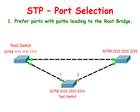Now let's look at some examples of how a switch would use spanning tree to choose its one root port. In these examples, we will be looking at the test switch and see how the root port was chosen. Here, we see that interface 1 on the test switch is green and that interface 2 is amber, meaning that it is being blocked. Both interface 1 and 2 are receiving BPDUs from the root switch, so the reason that interface 1 is chosen is based upon a rule further down the list.